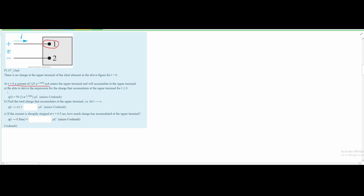Moving on to part A, we need to derive the expression for the charge that accumulates at the upper terminal for t greater than or equal to 0. The problem gives us the equation already solved, so it really did the entire work for us — all we have to do is plug in values.